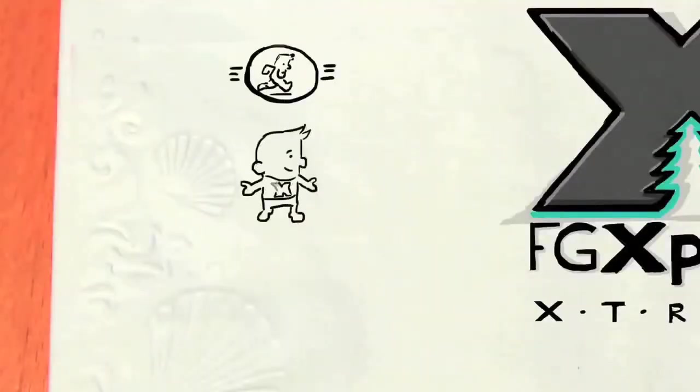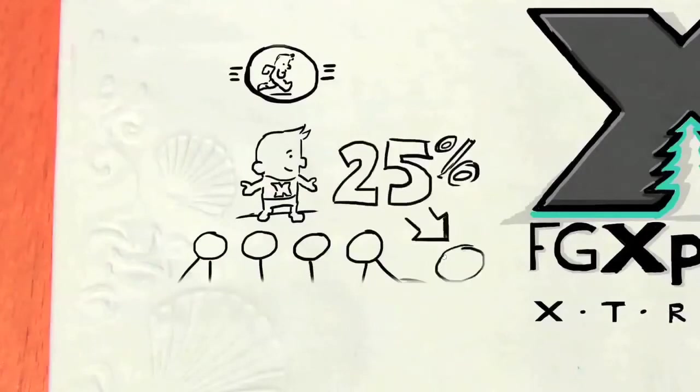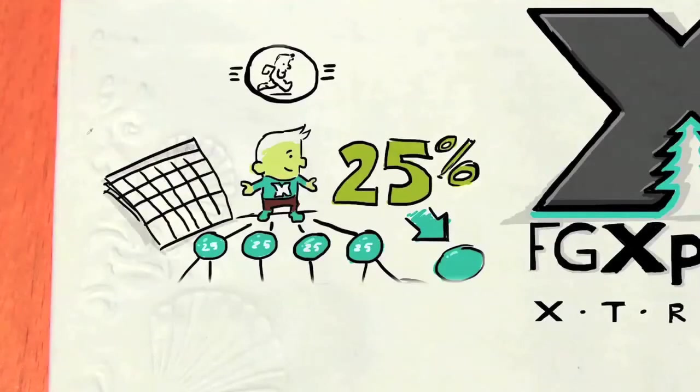The first stream of income will happen while enrolling new members. It's called the Fast Start Bonus. Imagine earning 25% of the volume from all your personally enrolled members during their first four weeks in business. And remember, there's no limit to how many members you can enroll. Keep enrolling and teach them to do the same. This will automatically create your X-Drive.